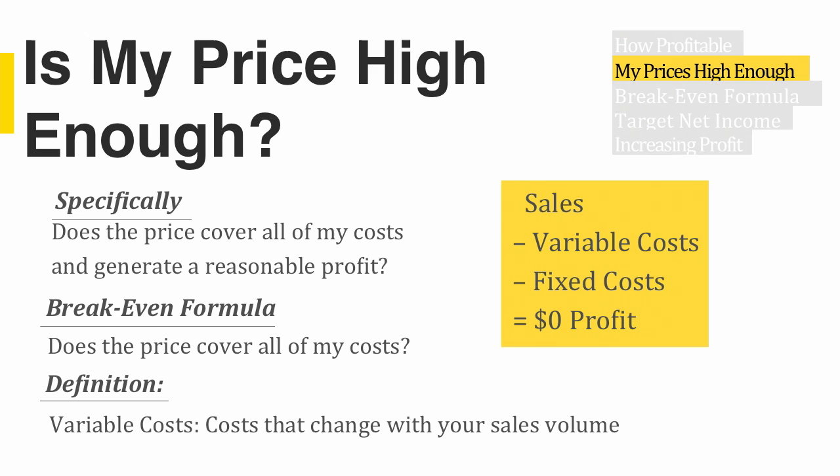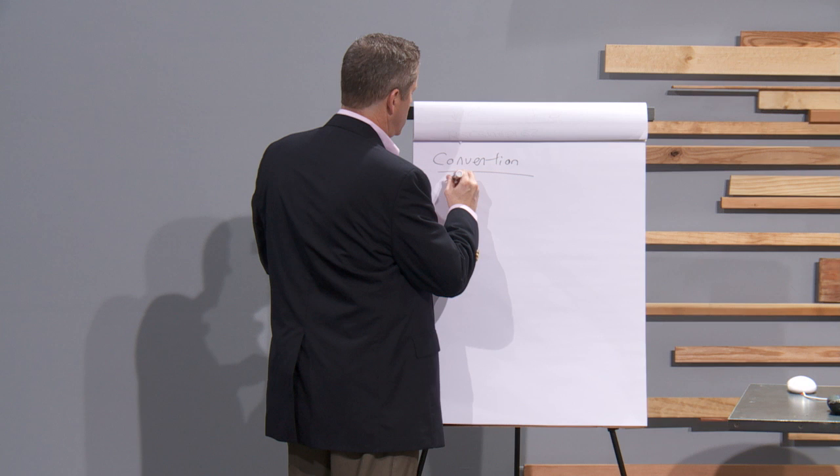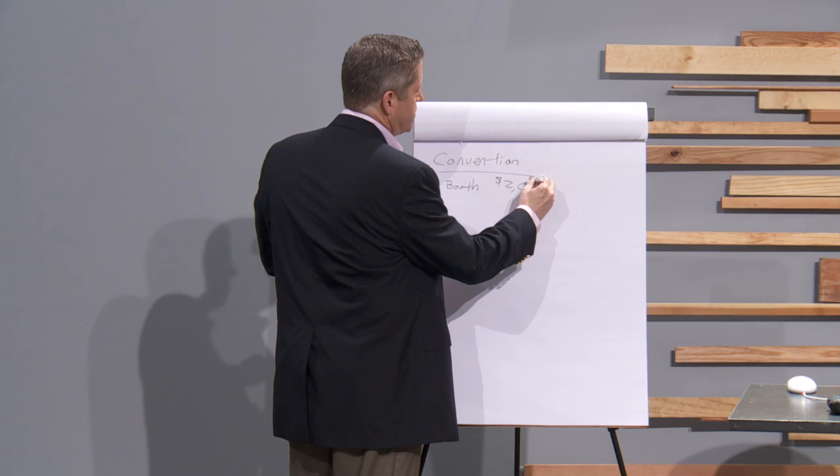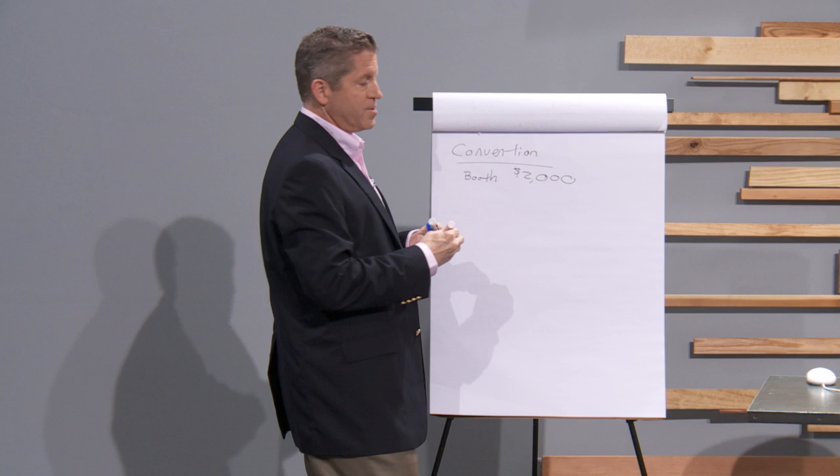There's an example I use in one of the books where I say, let's say you're considering going to a convention. I'm going to try to write a little neater today and slower. You're going to have a booth at a convention, and the booth is going to cost you $2,000. That's a fixed cost that's not going to change — you've got to write a check for $2,000.